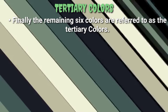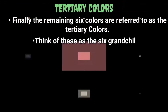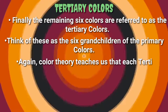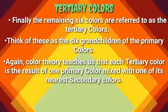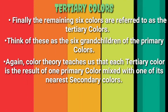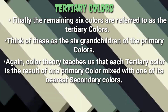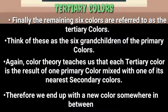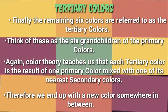Tertiary colors: finally, the remaining six colors are referred to as the tertiary colors. Think of these as the six grandchildren of the primary colors. Color theory teaches us that each tertiary color is the result of one primary color mixed with one of its nearest secondary colors, creating a new color somewhere in between.